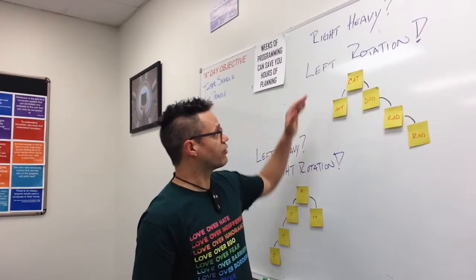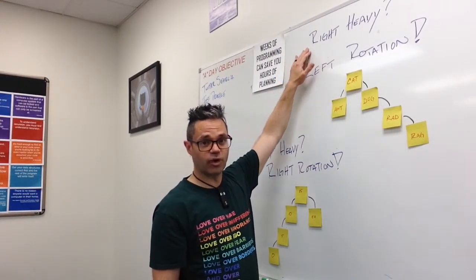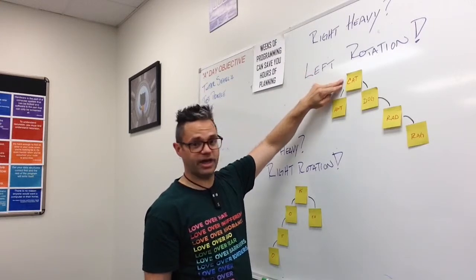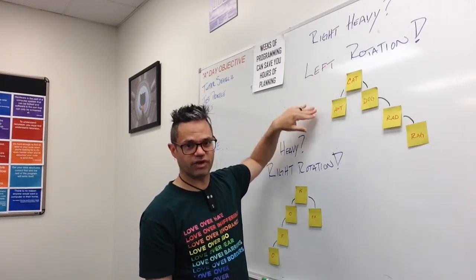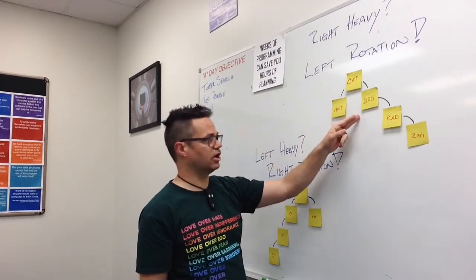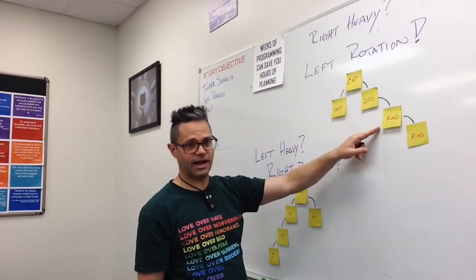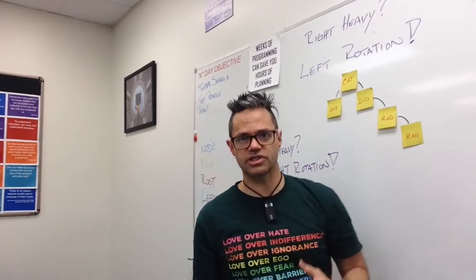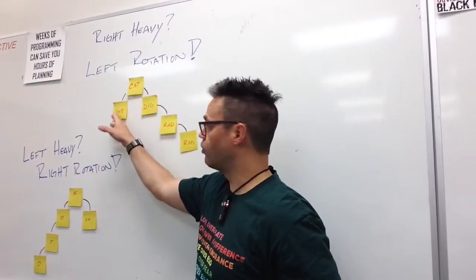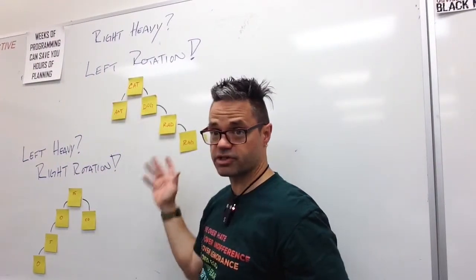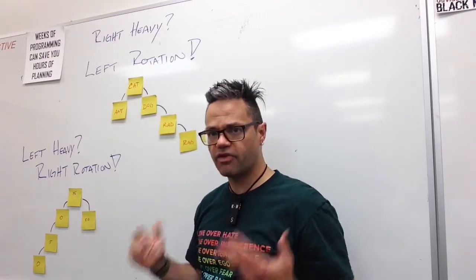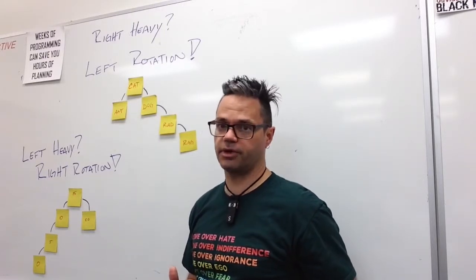So we're going to take a look at the first tree right here. In this case we have a right heavy subtree. We have cat at the root, an ant over here on the left hand side, and then on the right heavy side we have dog, rad, and then rag. As you can see, the height difference between these two subtrees is a height of one over here and a height of three over here — a difference of two, which is greater than one. So we have to actually make a change, and this is where the idea of a rotation has to take place.